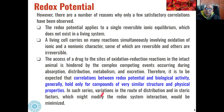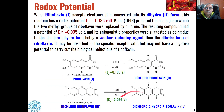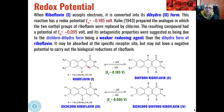The correlation between redox potential and biological activity generally holds good only for compounds very similar in structure and physical properties. In such series the variation in distribution and steric factors that might modify redox system interaction is minimized. Taking the example of riboflavin, this is a redox system where the two carbon-nitrogen double bonds can exist in a dihydro form.